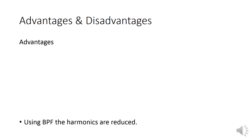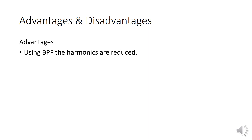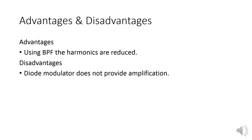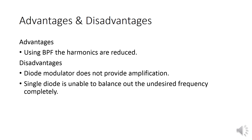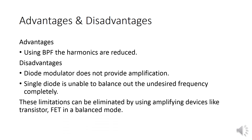There are some advantages and disadvantages. The advantage is that using the bandpass filter, harmonics are reduced. The disadvantage is that the diode modulator does not provide amplification. Since we are using only a single diode, it is unable to balance out the undesired frequencies completely. These limitations can be eliminated by using amplifying devices like transistor or FET in a balanced mode.